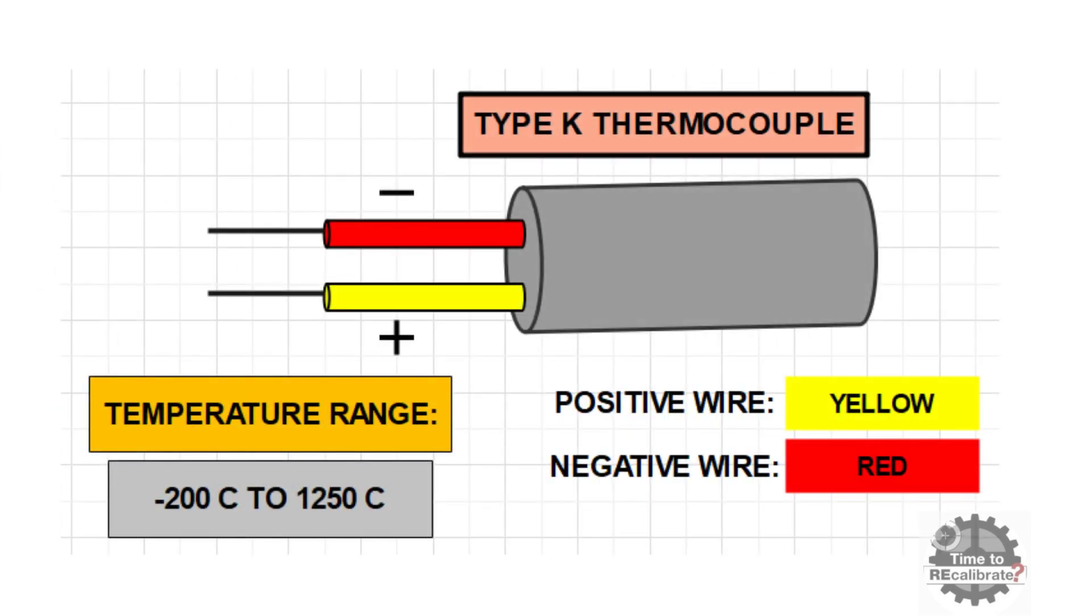As you can see, second type is K type thermocouple. K type thermocouple has yellow and red wire combination. In this combination, yellow wire is positive and red wire is negative. And K type thermocouple has temperature range of minus 200 Celsius to 1250 Celsius.